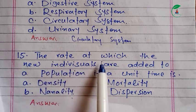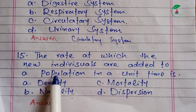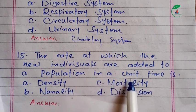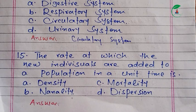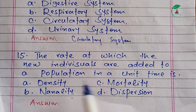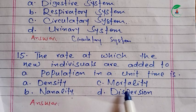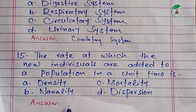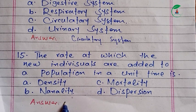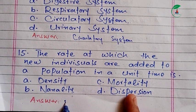Question fifteen: the rate at which new individuals are added to a population in a unit of time. The options are density, mortality, natality, and dispersion. Natality refers to the rate at which new individuals are added to a population.